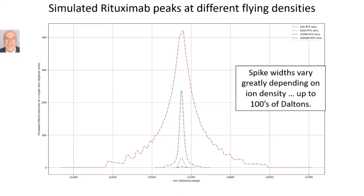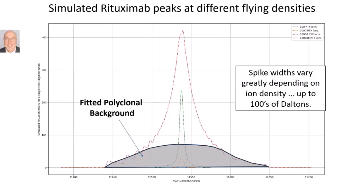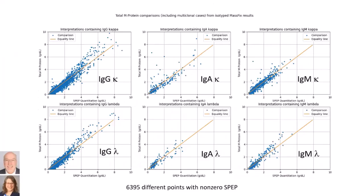After correcting for repulsion effects, we got much better fits across 6,000 patients with M proteins. This addressed known weaknesses of SPEP: at high levels, mass spec gives higher numbers because SPEP underestimates due to dye saturation; at low levels, SPEP overestimates because polyclonal background interferes. The resulting quantitation appears to be the best approach.